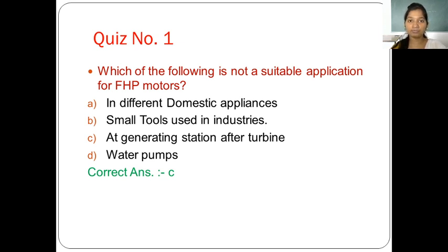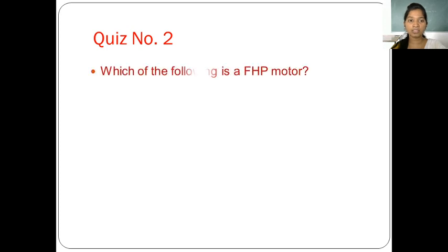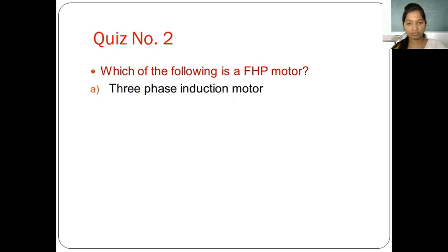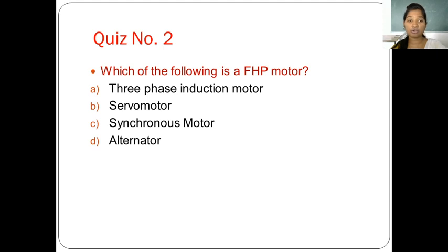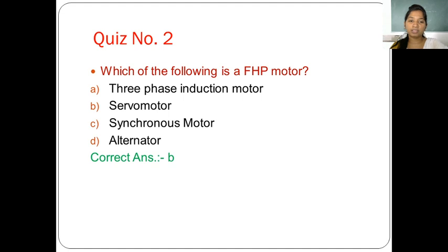At a generating station there is an AC generator, also called an alternator. Quiz number two: which of the following is a fractional horsepower motor? Options are: three-phase induction motor, servo motor, synchronous motor, and alternator. The correct option is B — servo motor — because three-phase induction motor, synchronous motor, and alternator are AC machines with horsepower rating more than 1 HP.